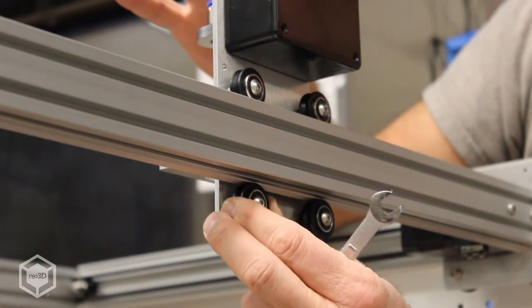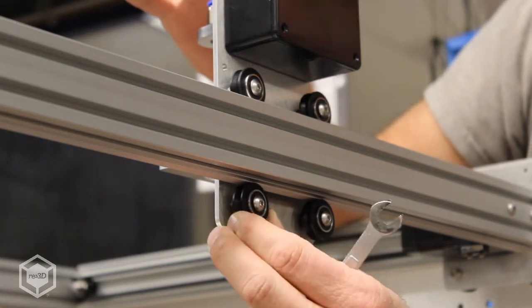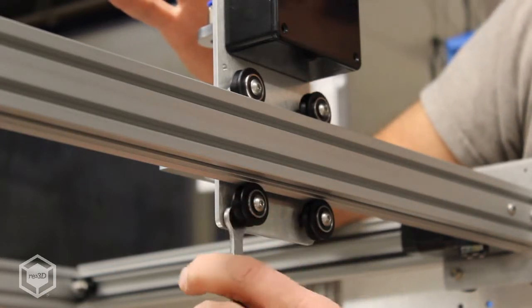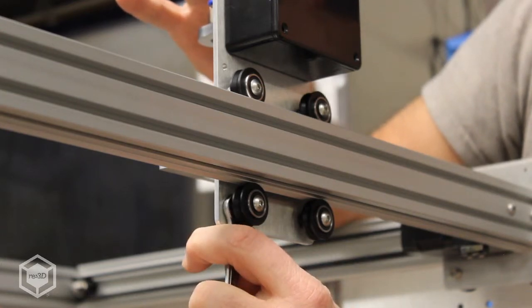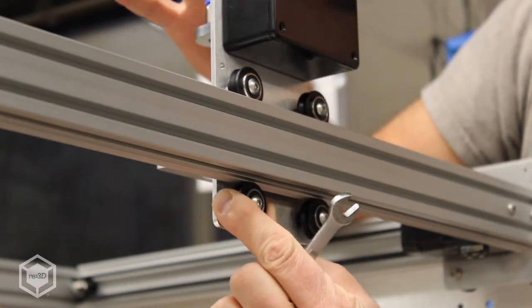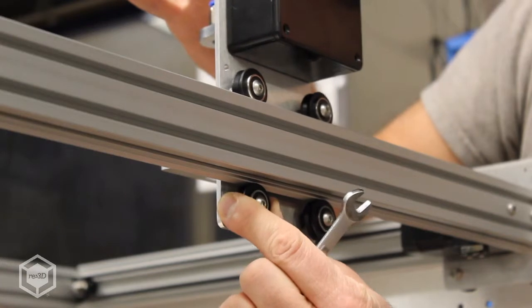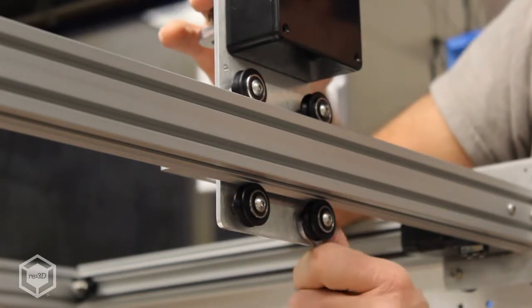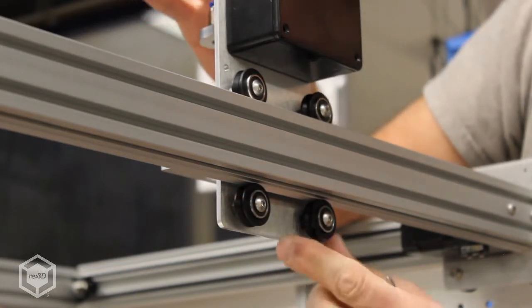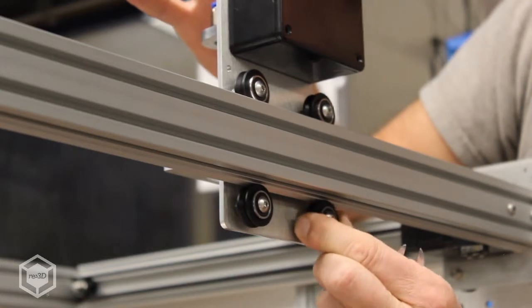Whenever I take a little pressure off, you'll see that it will move the whole head. So you want it where there's enough friction that it won't slip, but you don't want it too tight. And you want that on both sides.